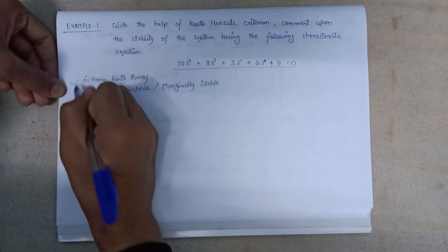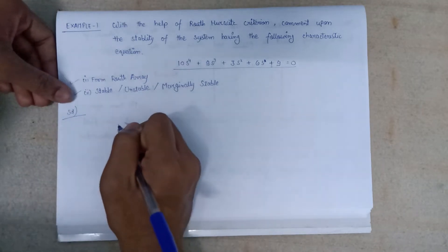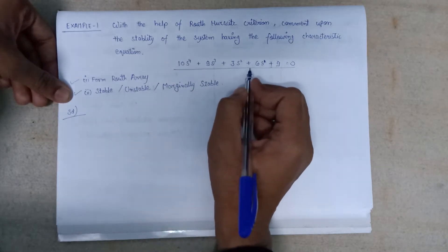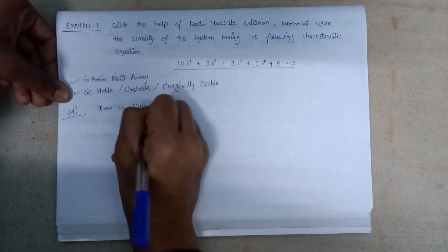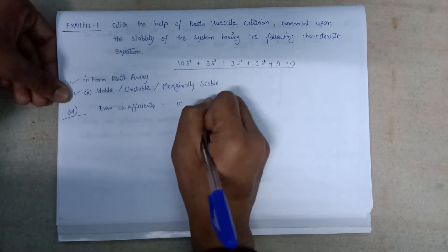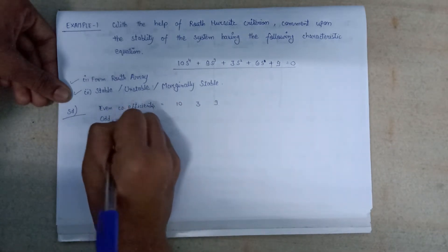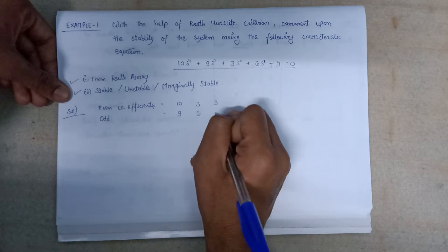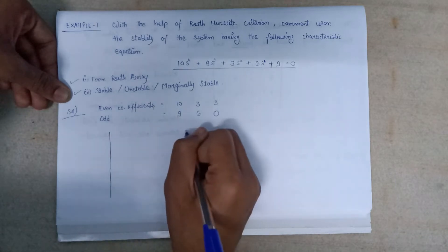So these are the two tasks we need to perform. Moving to the solution part: first of all we need to separate out the even and odd term coefficients of this characteristic equation. The even coefficients are 10, 3, and 9. The odd coefficients are 9, 6, and then 0 for the remaining term.